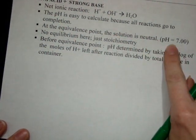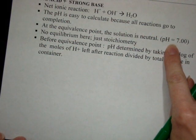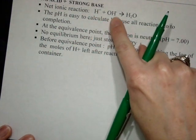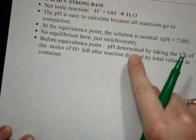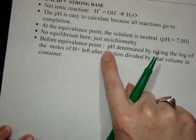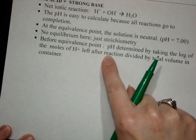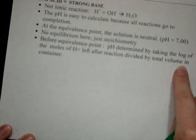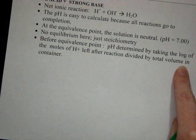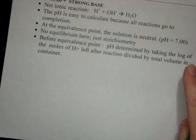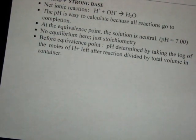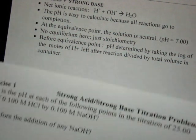So at the equivalence point, you should technically have a neutral solution because moles of hydrogen should equal moles of hydroxide. And then before the equivalence point, pH is determined by taking the log of the moles of hydrogen left after the reaction divided by the total volume in the container. So the only difference here might be that you might have to deal with a difference in volume. So let's take a look at our first problem.